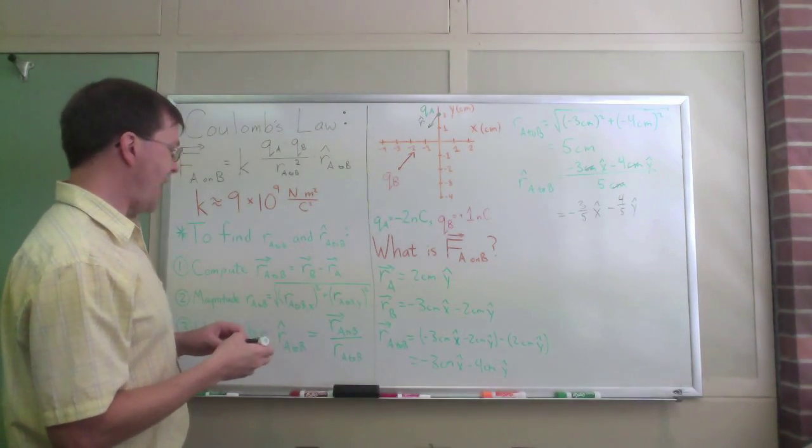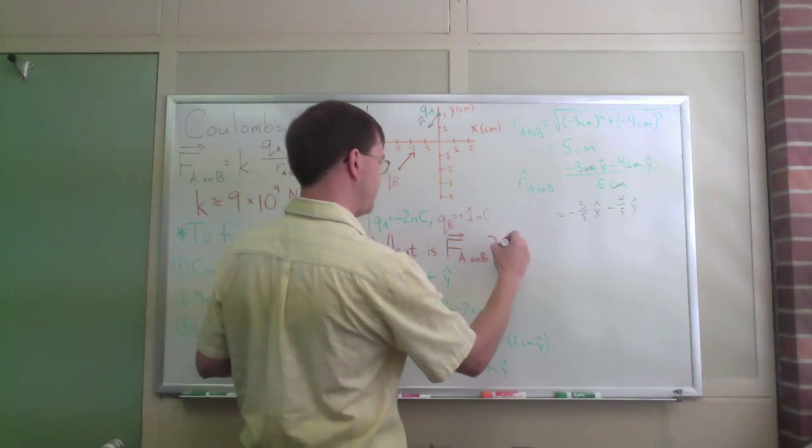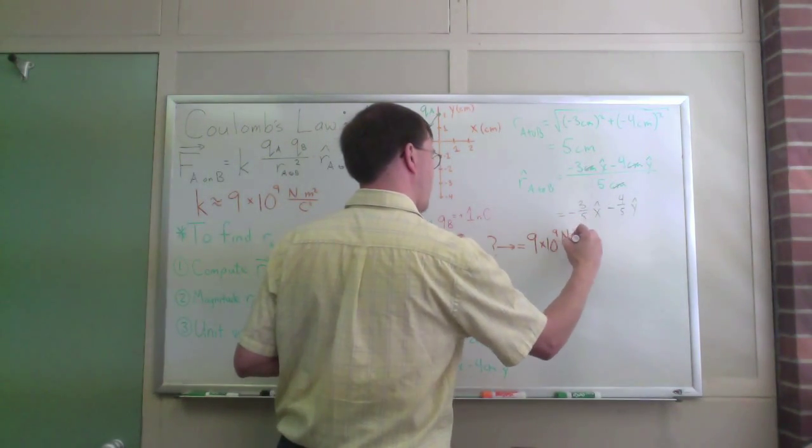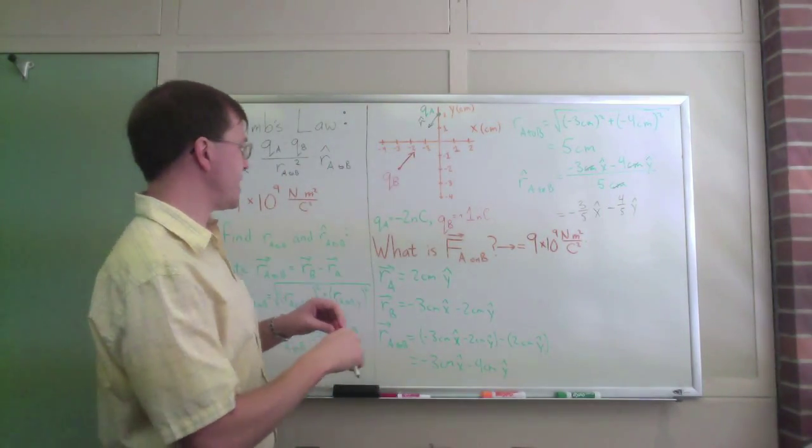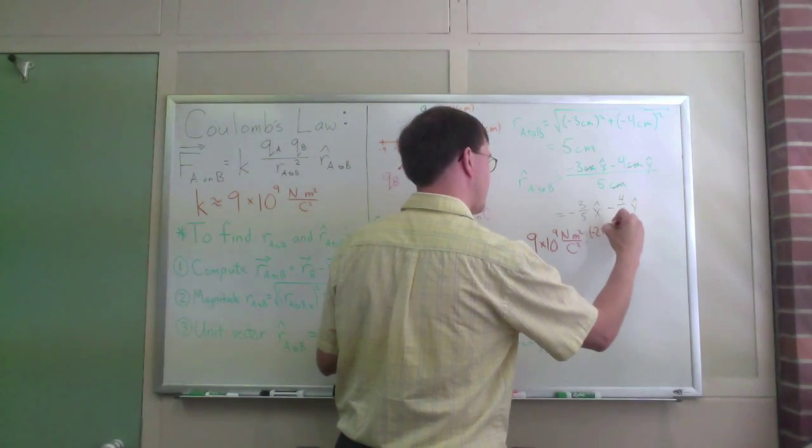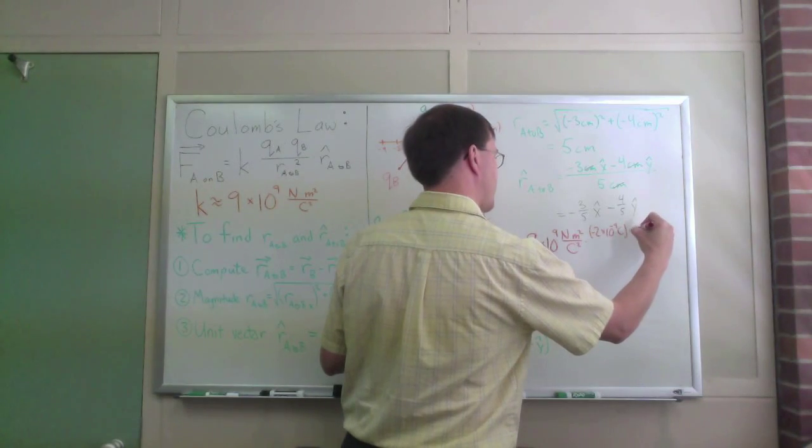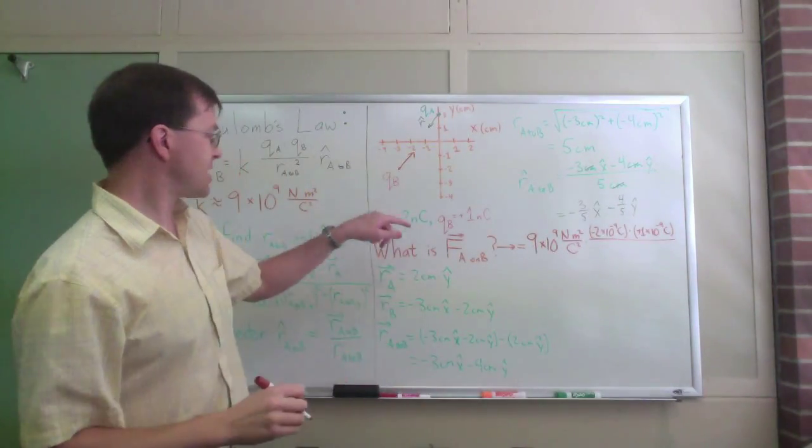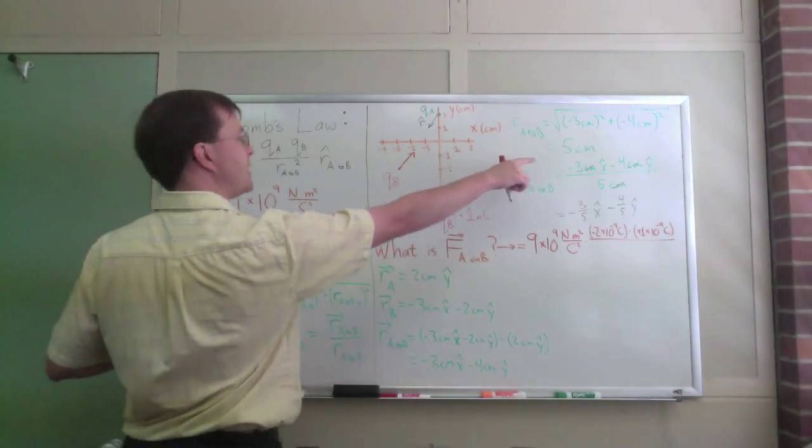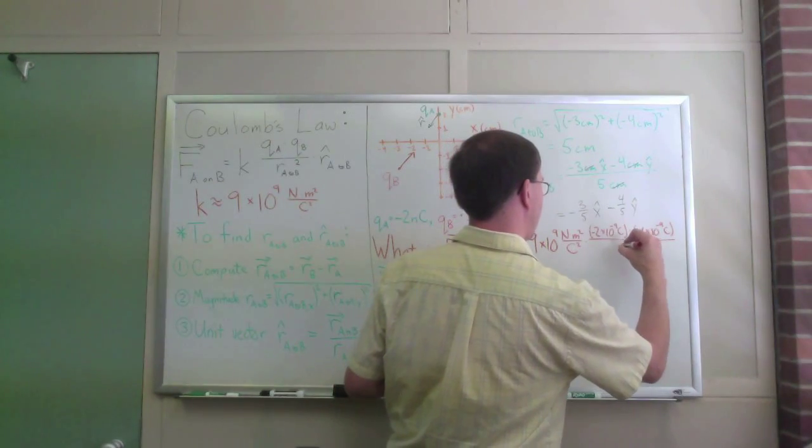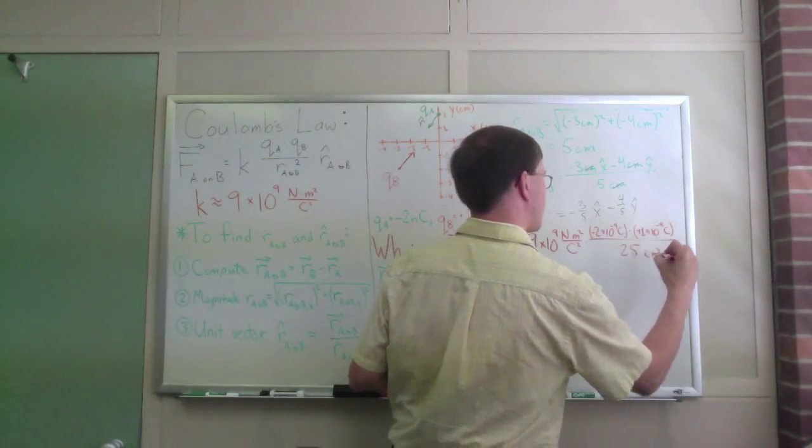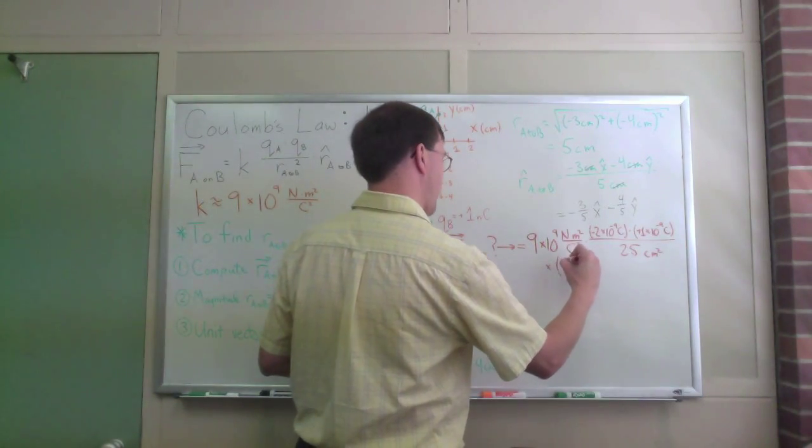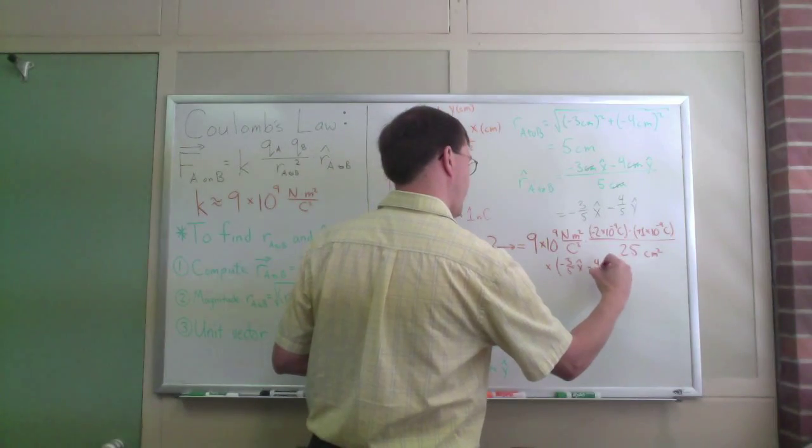So now I can put this all together and actually calculate my net force. I can plug into Coulomb's law that this is equal to 9 times 10 to the ninth newton meter squared per Coulomb squared times, let's see, QA is minus 2, minus 2 times 10 to the minus ninth Coulombs times plus 1 times 10 to the minus ninth Coulombs divided by my distance. Remember, I just plugged that result, here we are, that distance result in here, squared, divided by 25 centimeters squared, don't forget to square the units when you square the quantity, times, all this has to be times my unit vector, minus 3 fifths x-hat minus 4 fifths y-hat.